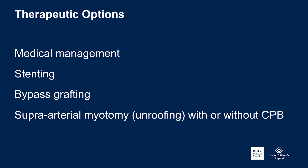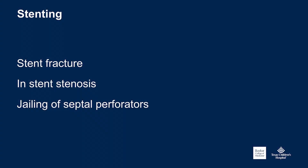Stenting, at least in children, we feel is a no-no — I think we have trouble convincing our adult colleagues of that. Bypass grafting has its problems. In the pediatric world, most people would consider unroofing or supra-arterial myotomy with or without bypass as the standard treatment. The problem with stenting, as you've heard, is that stents within the myocardial bridge are prone to fracture and are therefore not a durable solution.